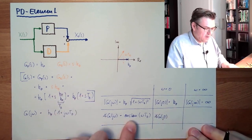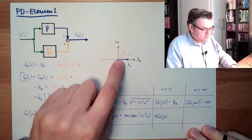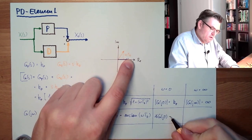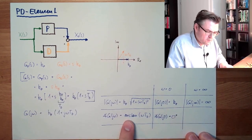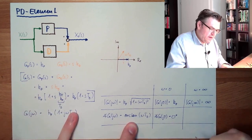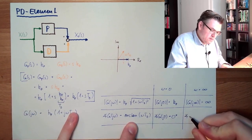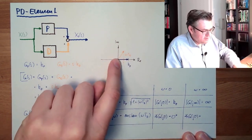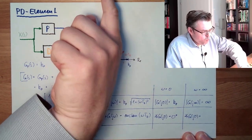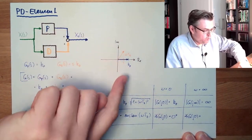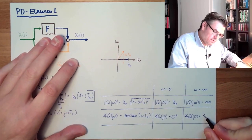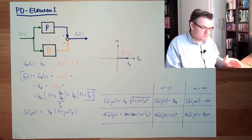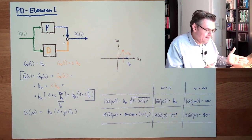For the argument at omega = 0: arctan(0) is zero degrees. At omega going to infinity, we get 1 plus 90 degrees, so we are at 90 degrees.